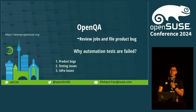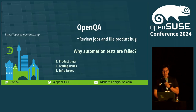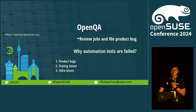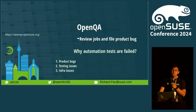The first should be the product bugs. Some issues happened, and we should file a bug against OpenSUSE. But sometimes not all the failures are caused by product bugs. Sometimes we need to revise our testing code.